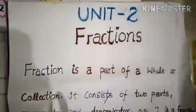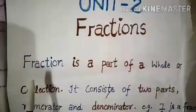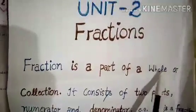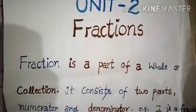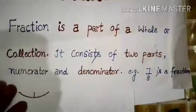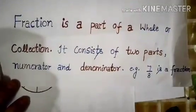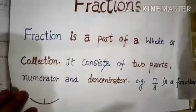Let's start with chapter number 2, Fractions. We will discuss what is a Fraction. A Fraction is a part of a whole or collection. It consists of two parts: numerator and denominator. For example, 7 by 8 is a Fraction. A Fraction tells us how many parts of a whole.